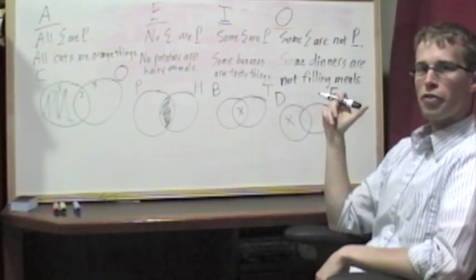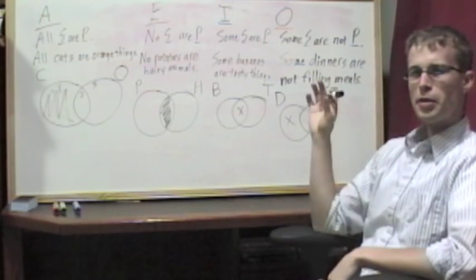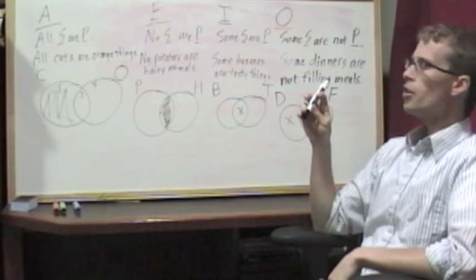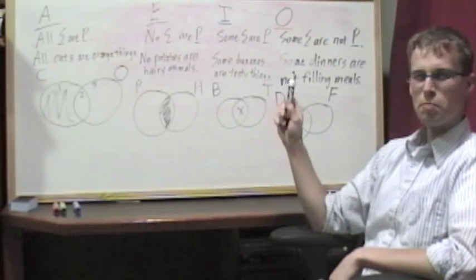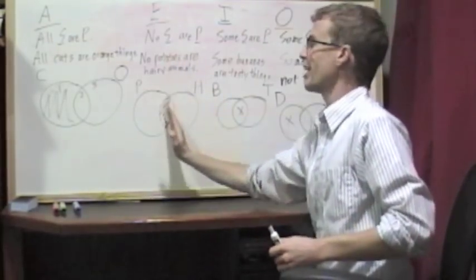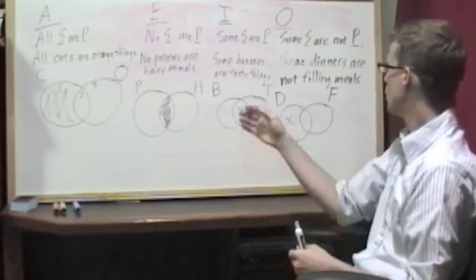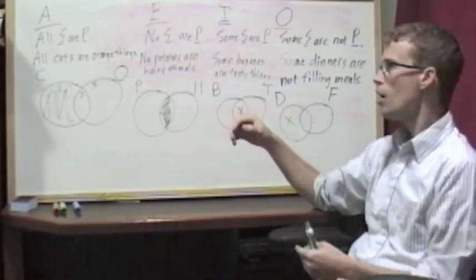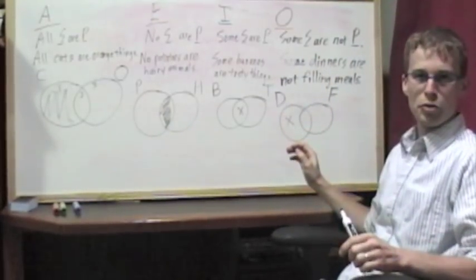Now, a couple more things to note about these. Something that's a bit more advanced. Notice that some of these Venn diagrams are symmetric. They have this nice bilateral symmetry. Right down the middle, you can split it, fold it in half. It would match up. Same thing with this one here. But the ones on the outside, the A and the O claims, they don't have that symmetry.